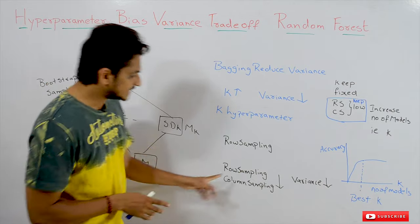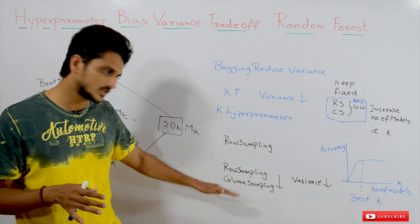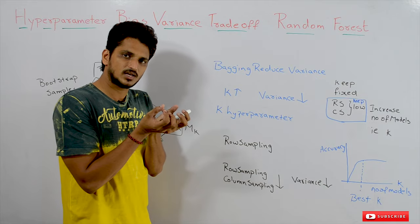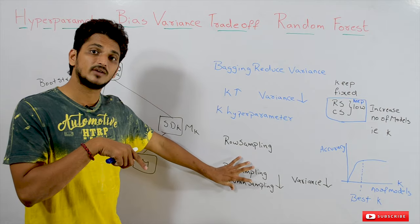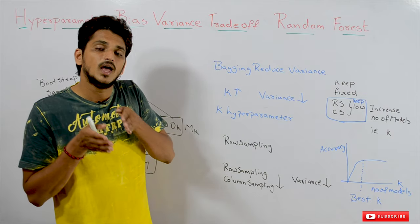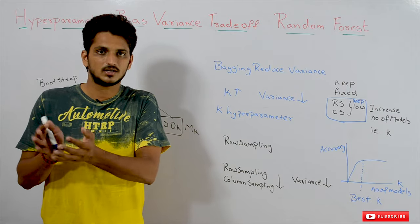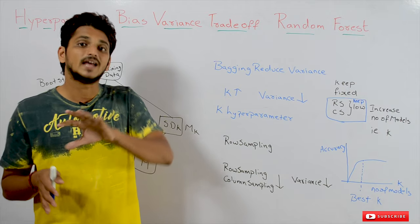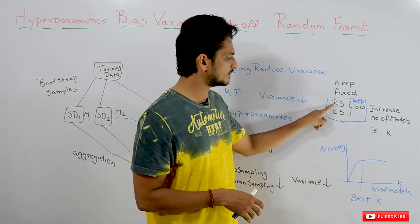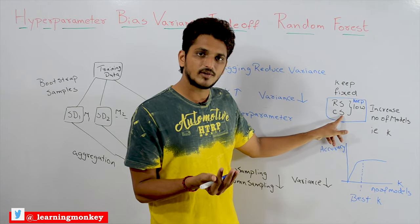What they do here is: as the row sample and column sampling values reduce, variance reduces. Why? Because if you are taking a very small amount of row samples and column samples, the decision tree constructed on that sample data is high variance relative to itself, but when compared with the complete data and all columns, it is not that specific about each and every data point. If it is not that specific, it is not high variance. That is why as row sampling and column sampling values reduce, variance decreases. Based on this, they keep the row sampling and column sampling values fixed based on the dataset — for example, row sampling at 50% and column sampling at 40%.